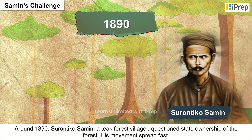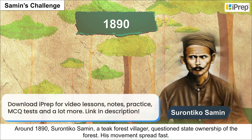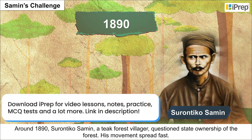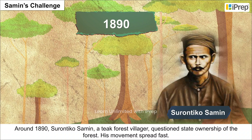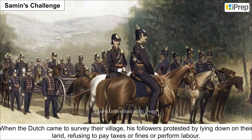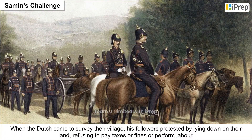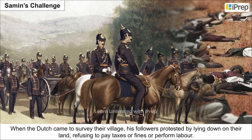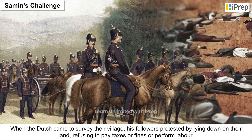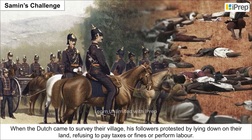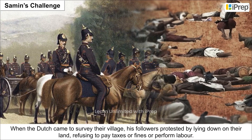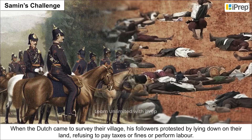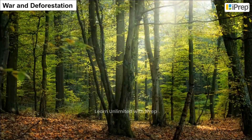Samin's challenge: around 1890, Surontiko Samin, a teak forest villager, questioned state ownership of the forest. His movement spread fast. When the Dutch came to survey their village, his followers protested by lying down on their land, refusing to pay taxes or fines or perform labor.